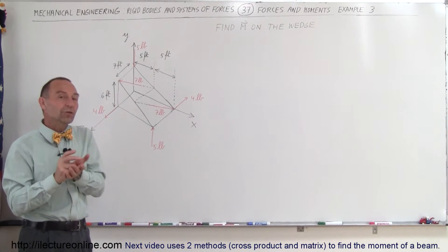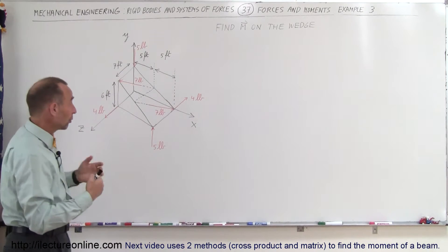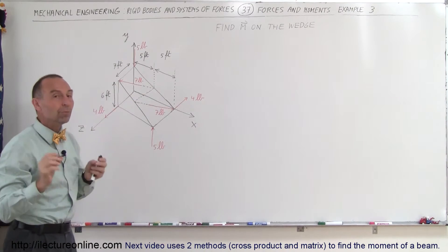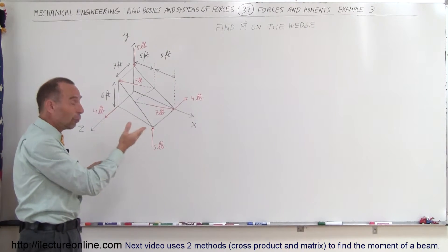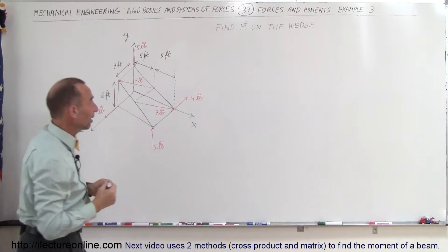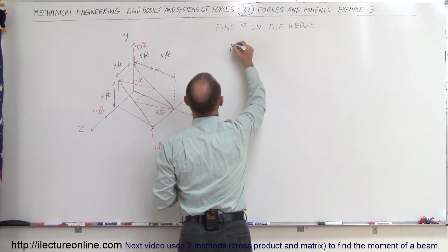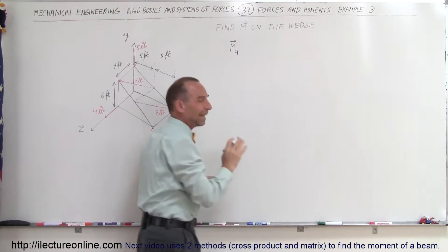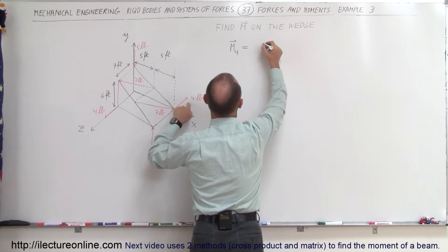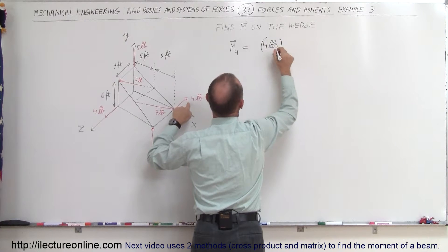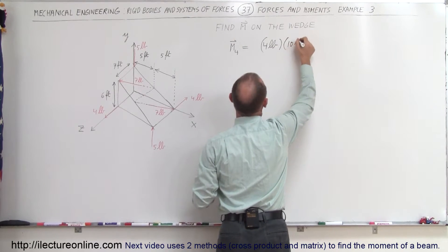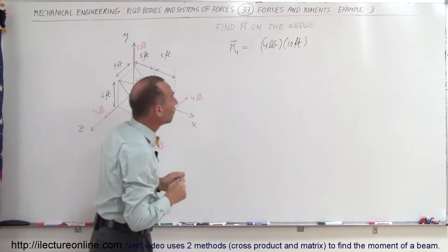We're going to find the moments of the three couples and add them together. We'll start with the easiest couple — the two 4-pound forces — because you can see the line of action clearly. All we have to do is multiply the force by the perpendicular distance between the two lines of action. So M sub 4 equals four pounds times 10 feet, which gives us a moment of 40 foot-pounds.